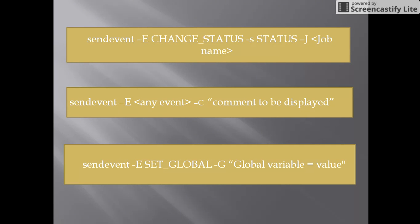Next command: send_event -e set_global -g global_variable=value. This command is used because we have a global variable for each machine, and we have to pass the value for that global variable — like on, off, or delete.